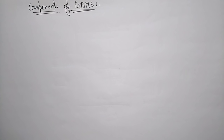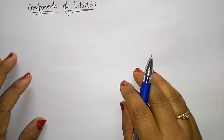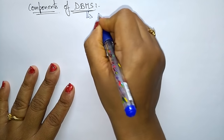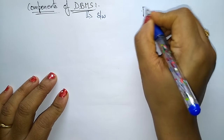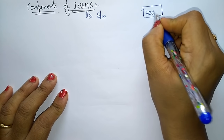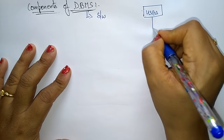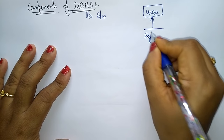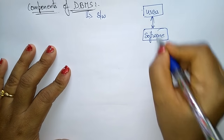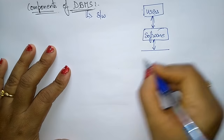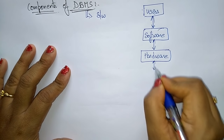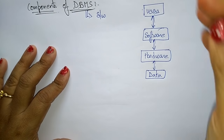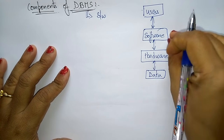Hi students, coming to the next topic in the subject Database Management System: components of DBMS. The database management system is software used to manage the database. The components present in a DBMS are users, software, hardware, and data. All of these communicate with each other — users want to communicate with data using software and hardware.